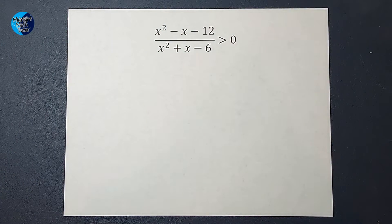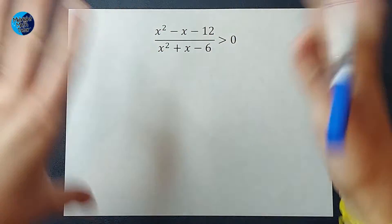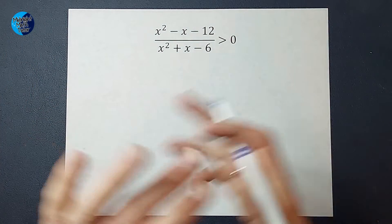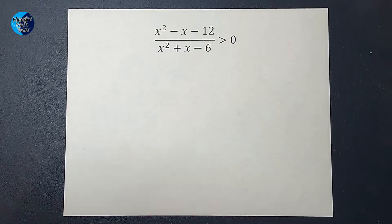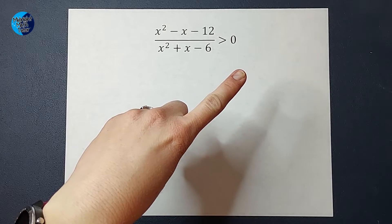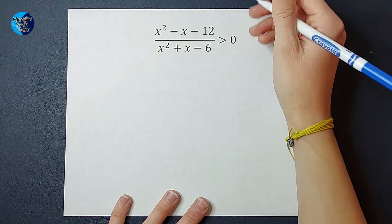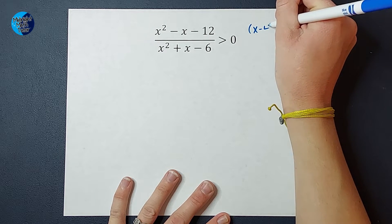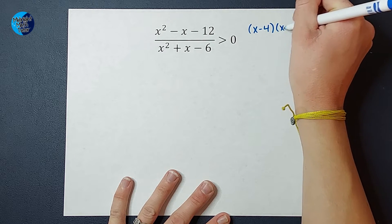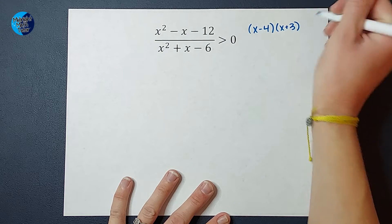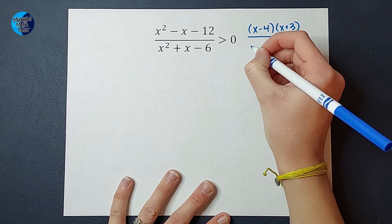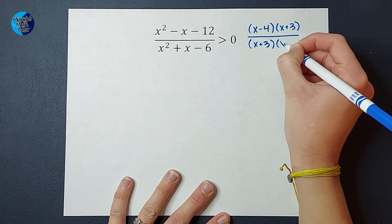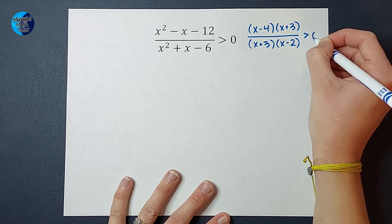So the first thing I want to do is get all my variables and numbers and everything on one side and zero on the other side. So guess what? We're good. All right, from there, I want to factor anything that can factor. I will stick a video in the corner that's a factoring review, but I'm just going to tell you right now that this factors to x minus 4 times x plus 3 on top and x plus 3 times x minus 2 on bottom. And we're still greater than zero.